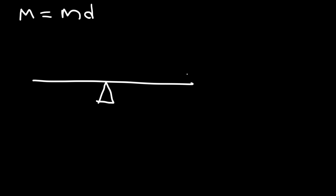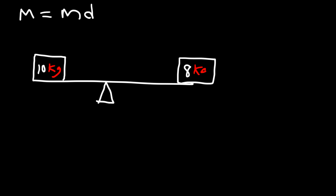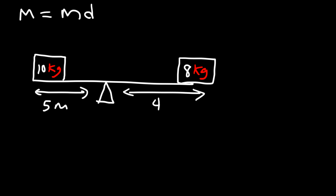Here's the fulcrum. Let's place an 8 kg mass on the right side and a 10 kg mass on the left side. The 10 kg mass is 5 meters away from the fulcrum, and the 8 kg mass is 4 meters away. My drawing is not to scale, but focus on the concept. The moment of the 8 kg mass is mass times distance: 8 times 4, so it's 32 kg·m.